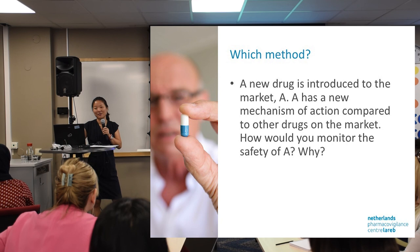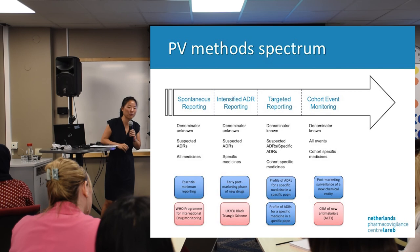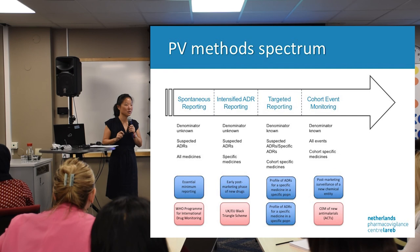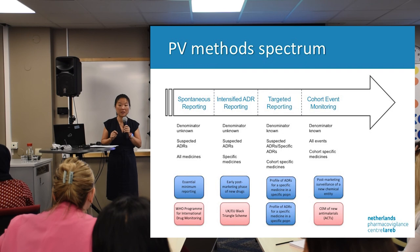To wrap up: when we talk about methods, it is very important to start with the question 'what do I want to know?' — that should be the starting point, not 'I want to do a CEM study.' Then you need to think about feasibility: do you have the resources and infrastructure in your country to run a CEM, or can you better do a targeted spontaneous reporting? Begin with a question, assess feasibility, and then make your choices.